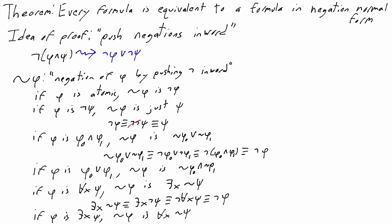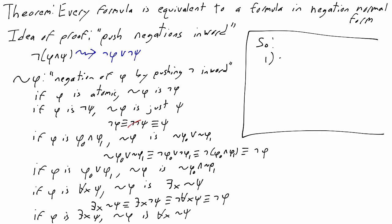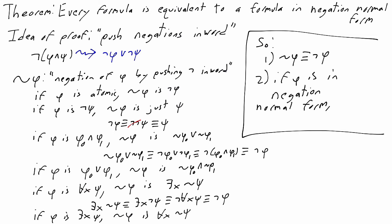This gives this operation, squiggly negation, so that: one, squiggly negation of phi is equivalent to the ordinary negation of phi; and second, if phi is in negation normal form, then squiggly negation of phi is also in negation normal form. So from here on, we're going to write this squiggly negation on formulas to remind us that we're staying in negation normal form, but taking a formula equivalent to the usual negation.